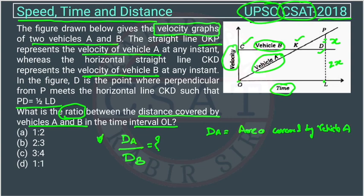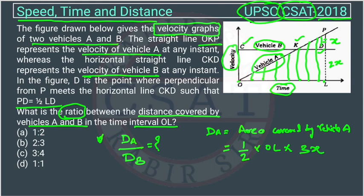The area covered by vehicle A is a triangle. The area of a triangle is equal to half into base into height. The base is OL and the height is PL. PL is equal to 2x plus x, which is 3x. So the area for vehicle A is half into OL into 3x.